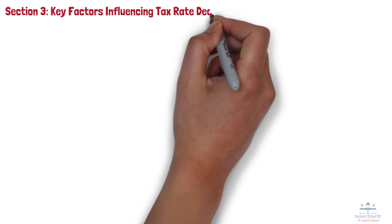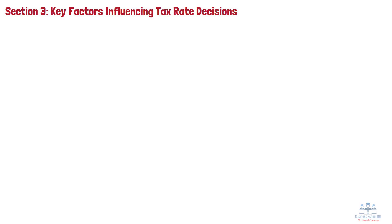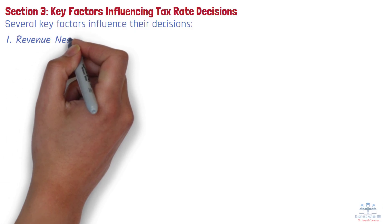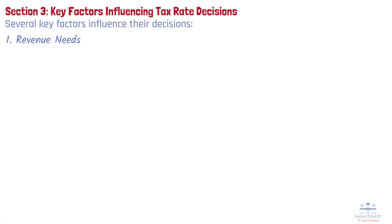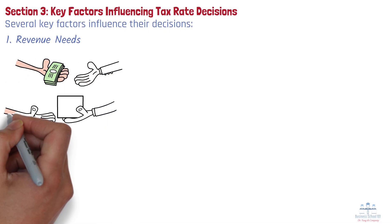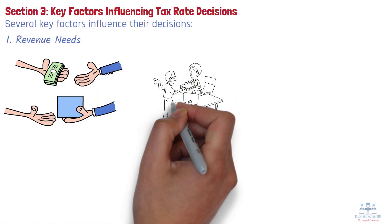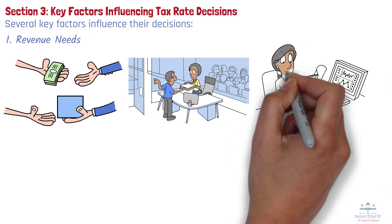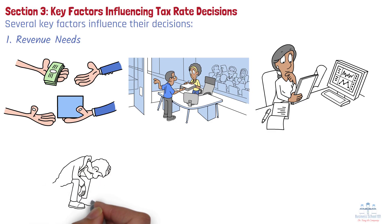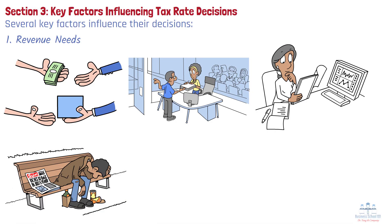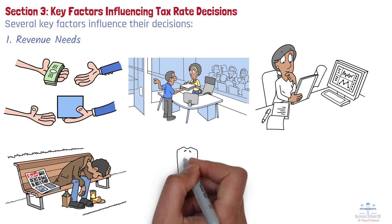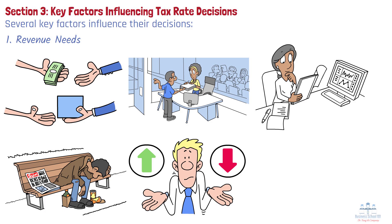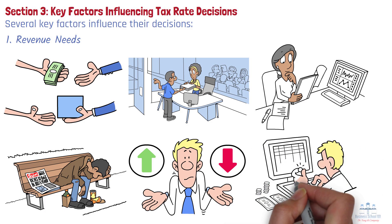So how do governments decide what tax rates to set? Several key factors influence their decisions. First, revenue needs: governments consider how much revenue they need to fund their operations and public services. This depends on the size of the government's budget, the scope of public services, and long-term projects like infrastructure development. For example, during times of economic crisis like the 2008 financial crash or the COVID-19 pandemic, governments may increase spending on social programs, and in turn might consider adjusting tax rates to cover these increased expenses.